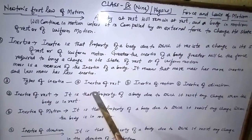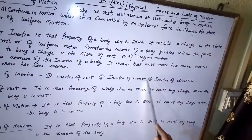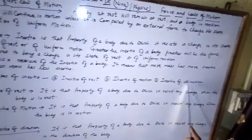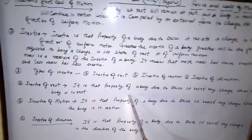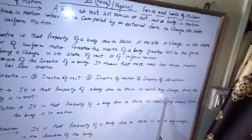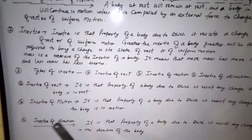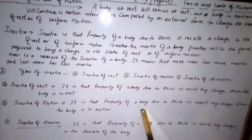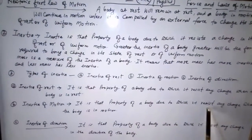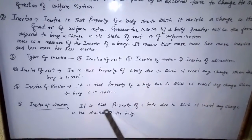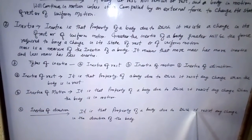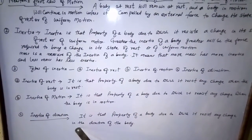There are three types of inertia. First is inertia of rest — it is that property of a body due to which it resists any change when the body is at rest. Second is inertia of motion — it is that property of a body due to which it resists any change when the body is in motion. Third is inertia of direction — it is that property due to which a body resists any change in its direction of motion.